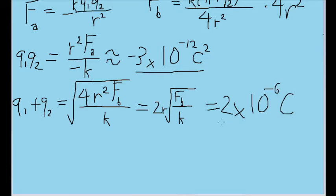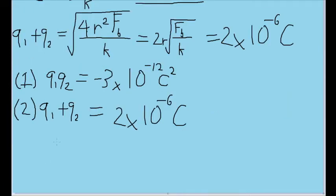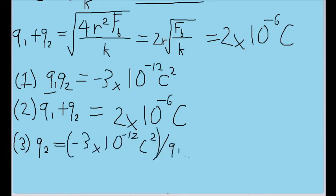So now we found ourselves a system of equations where Q1 times Q2 is negative three times 10 to the negative 12 Coulombs squared, and Q1 plus Q2 is equal to two times 10 to the negative sixth power Coulombs. We still need to actually find out what these charges are. If we first want to find Q1, for instance, then let's solve equation number one here for Q2. So we'll call it equation three. If we just simply divide both sides of equation one by Q1, then we find that Q2 is equal to the value for equation one divided by Q1.